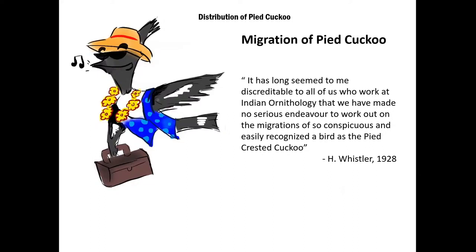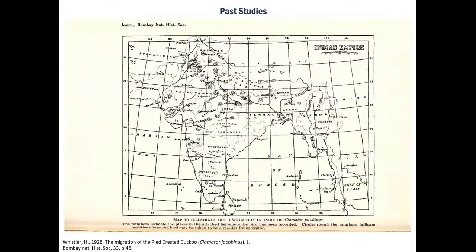There have been very limited studies on its migration. One of the early studies was done by Whistler in 1928, where he pinpointed observations throughout India and certain locations where it is observed seasonally. As you can see in the map, he marked locations in circles where the species is observed seasonally. However, in the southern part of India, the species is resident.